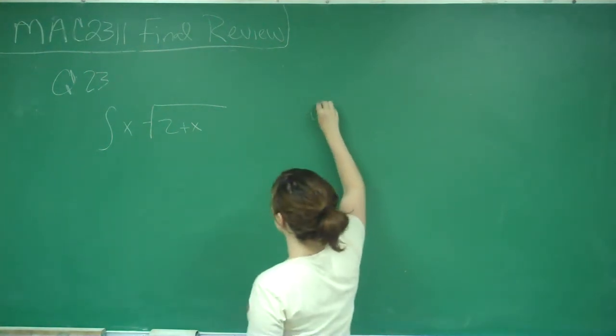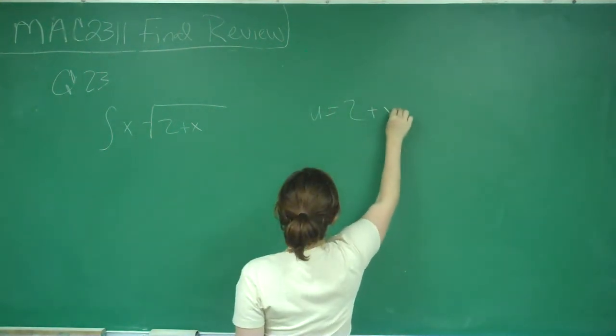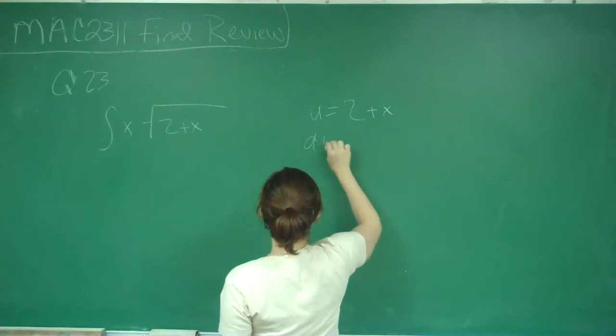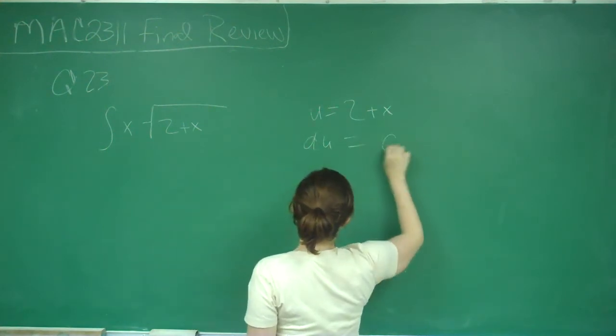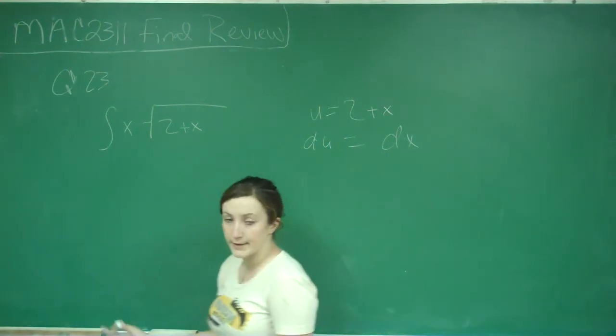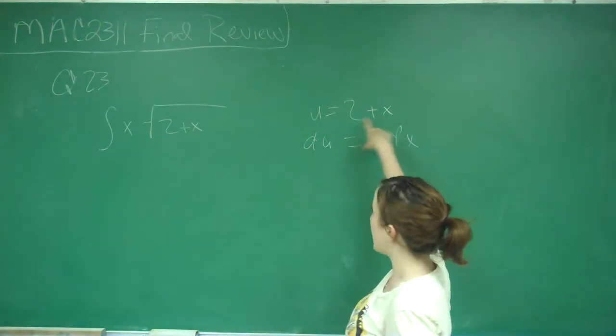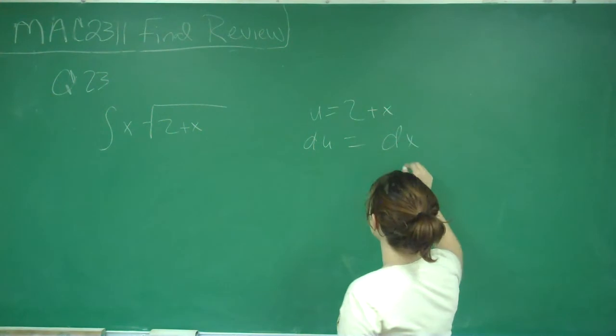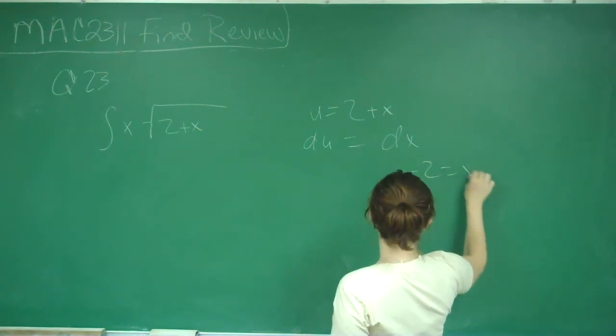First, we're going to say that u equals 2 plus x. Therefore, du equals dx. But we have a problem because we have this x, so what do we do with it? We can solve for x in terms of u, so u minus 2 equals x.